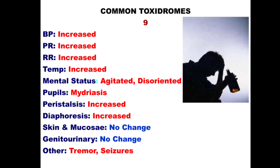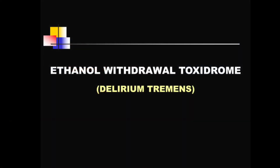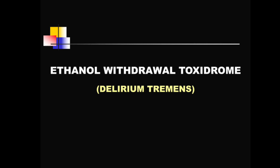Number nine: the image shows somebody who appears to be an alcoholic, so naturally we think of ethanol. The features are not indicative of intoxication but of withdrawal — alcohol withdrawal in an addict who has consumed large amounts of liquor over a long period of time. The most important features include tremors, seizures, and significant psychiatric manifestations — that is why this is called delirium tremens. This is a life-threatening, commonly seen alcohol withdrawal toxidrome.